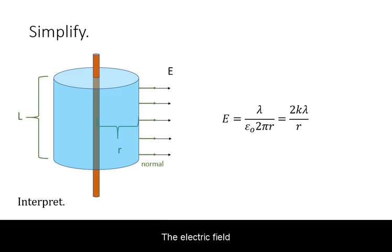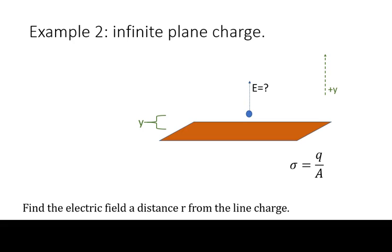The electric field from a uniform line charge drops off as distance r.